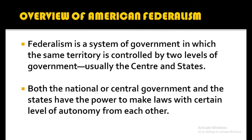Overview of American Federalism. Federalism generally is a system of government in which the same territory is controlled by two levels of government, usually the center and state. Both the national or central government and the states have the power to make laws with a certain level of autonomy from each other.